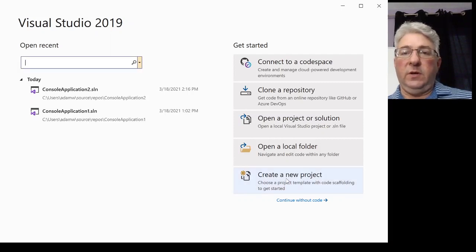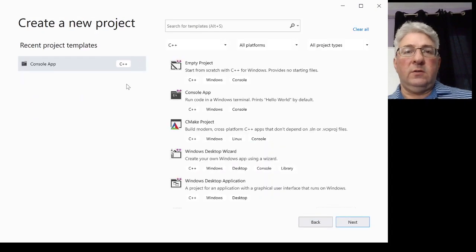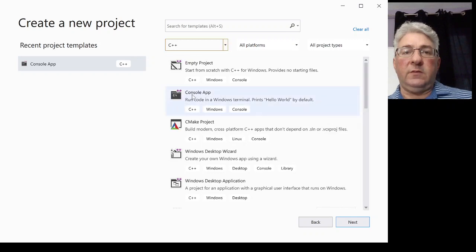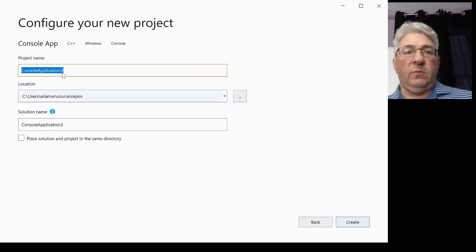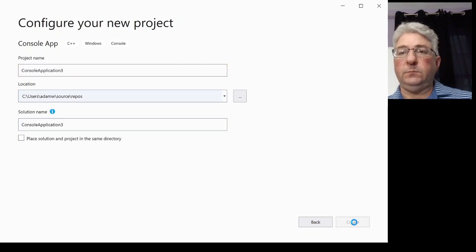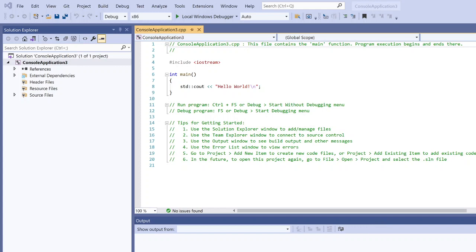Once you've clicked on a default application, you'll want to click on create a new project. And on this drop-down, you'll just say C++. And this console app. And for the name and location, you can just accept the defaults.